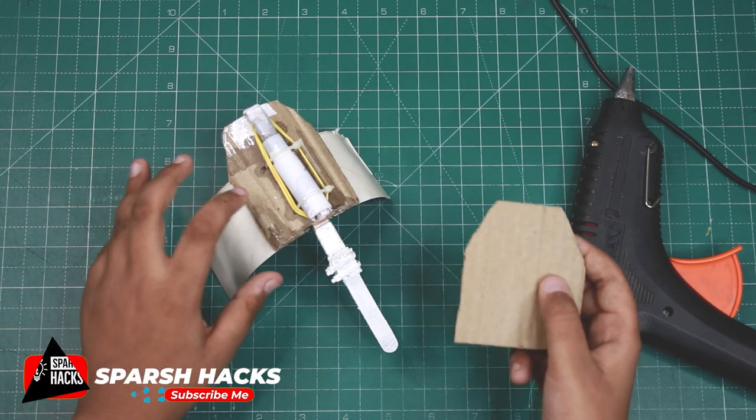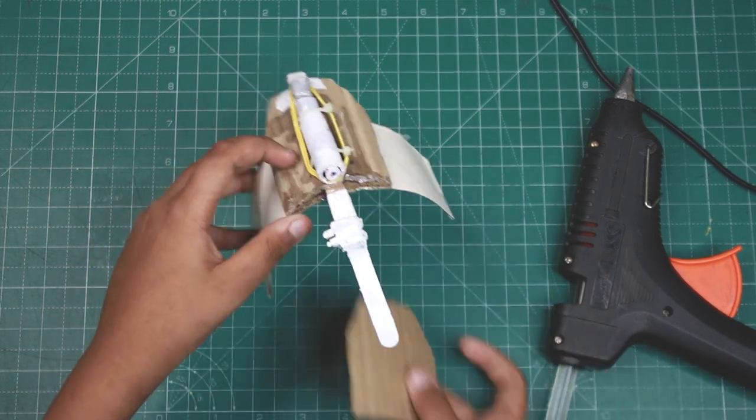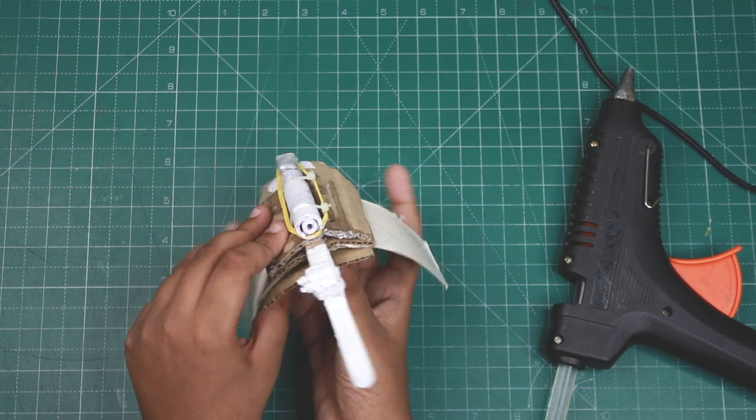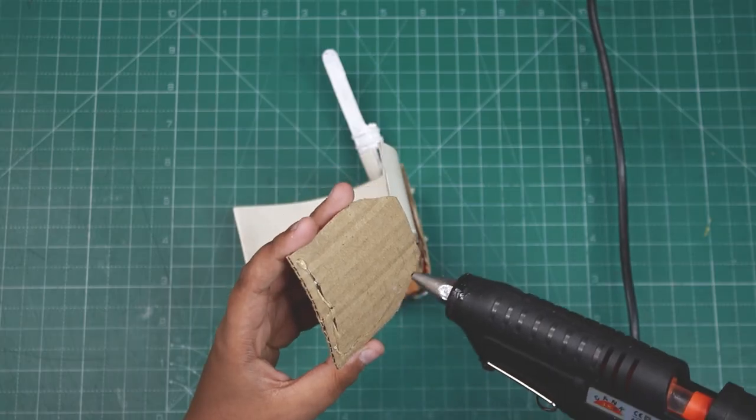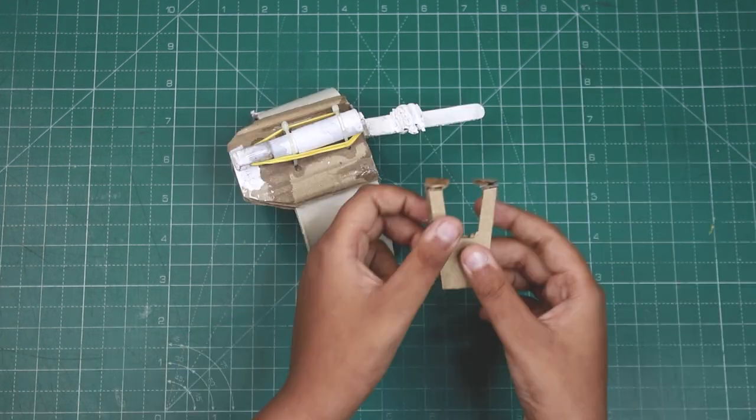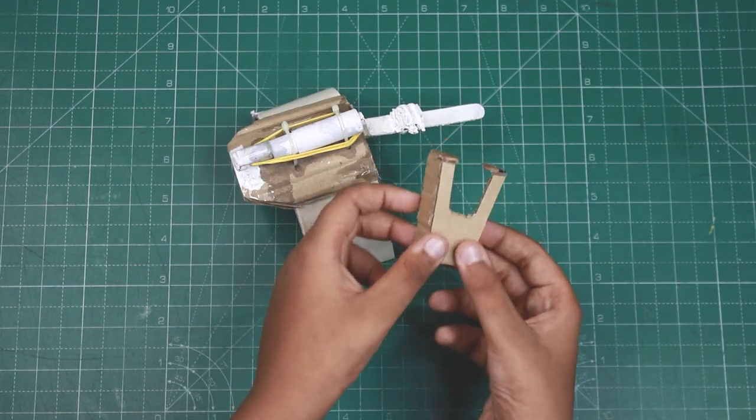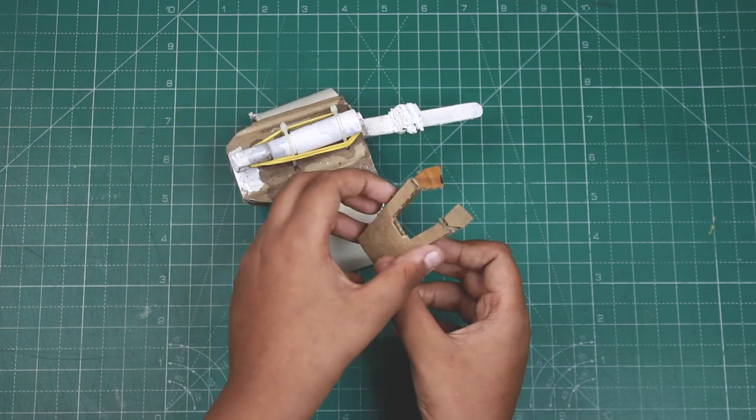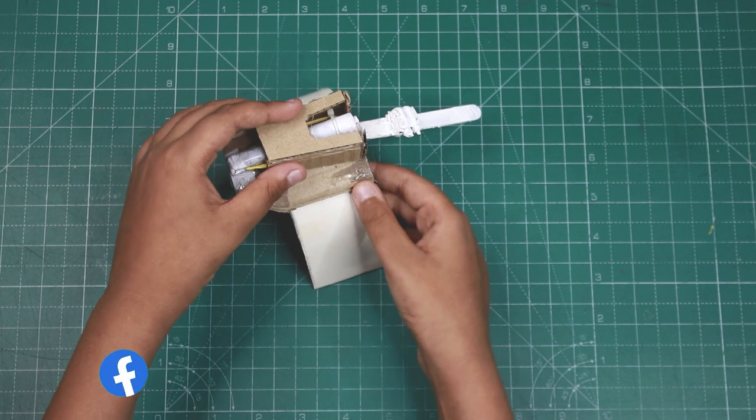Now we have one more piece of cardboard and we will paste it down here. Now we have made this cardboard cover to give our web shooter its shape and we will put it like this.